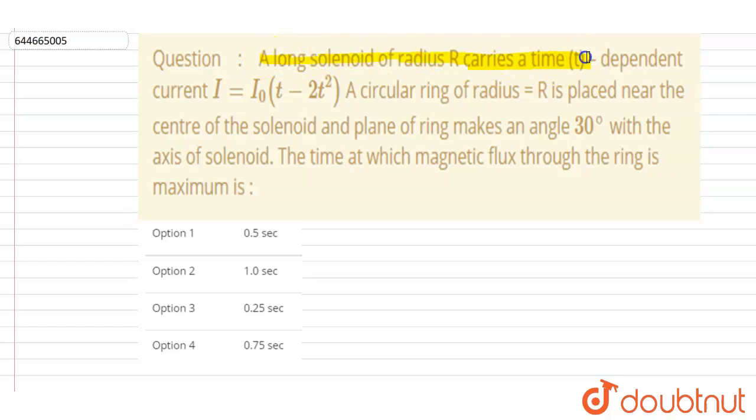A long solenoid of radius R carries time-dependent current I = I₀(t - 2t²). A circular ring of radius r is placed near the center of the solenoid, and its plane makes an angle 30 degrees with the axis of the solenoid.